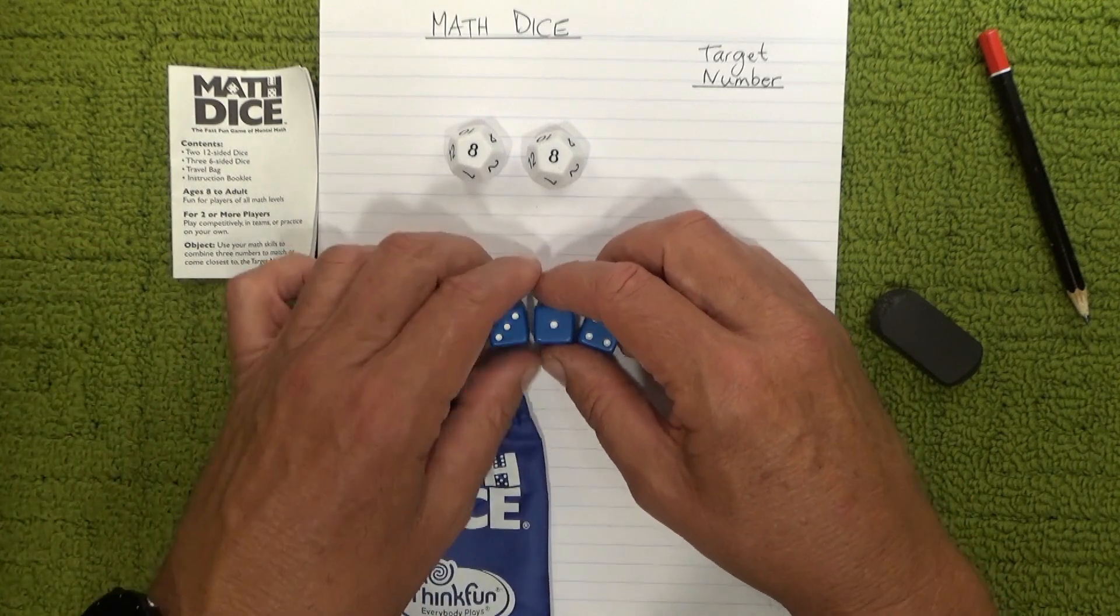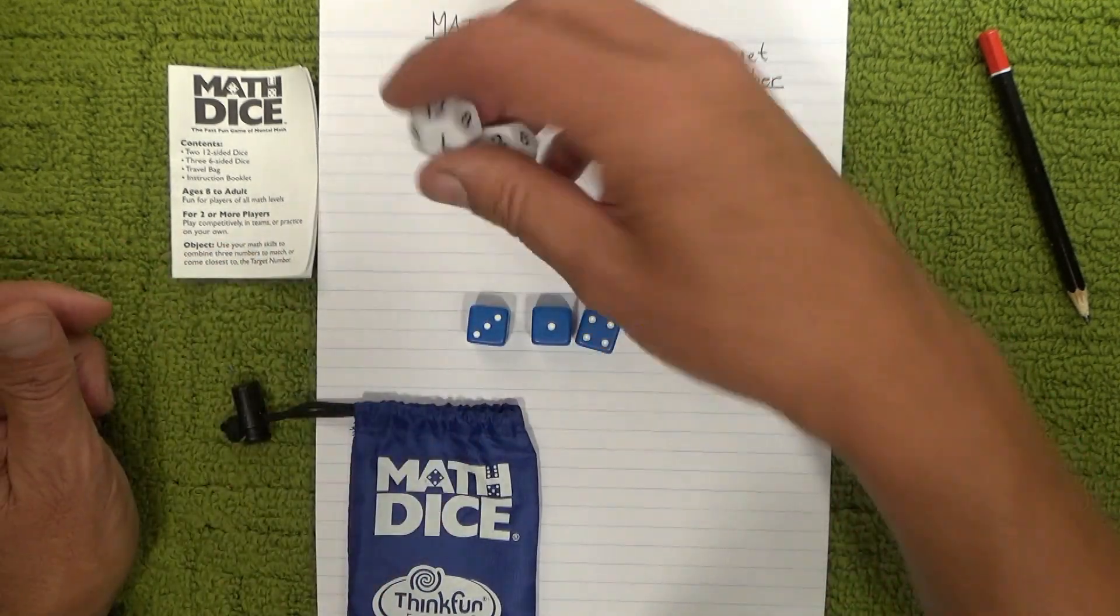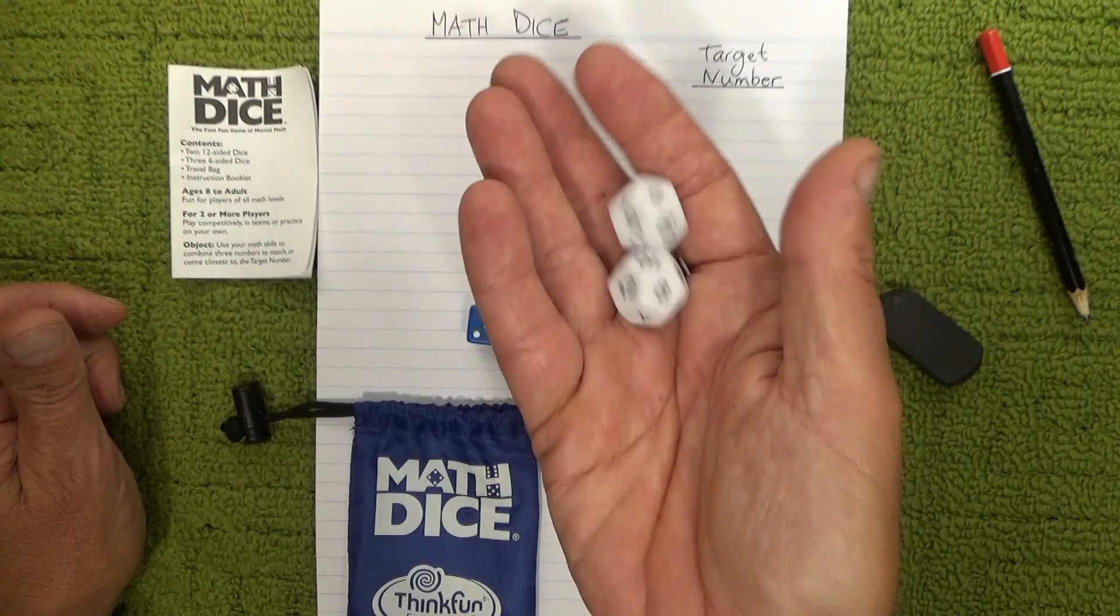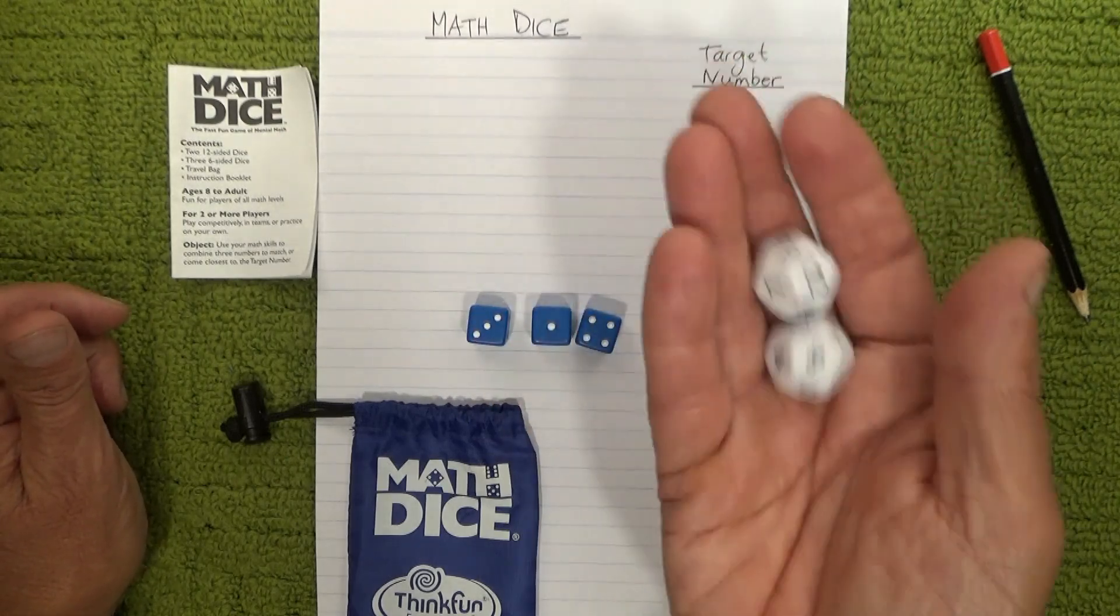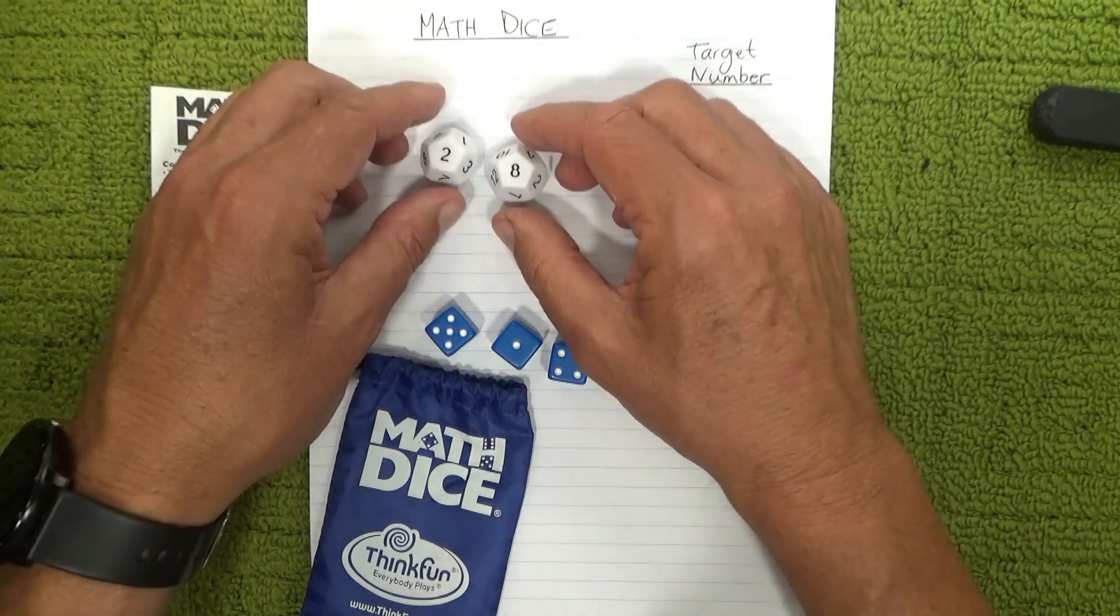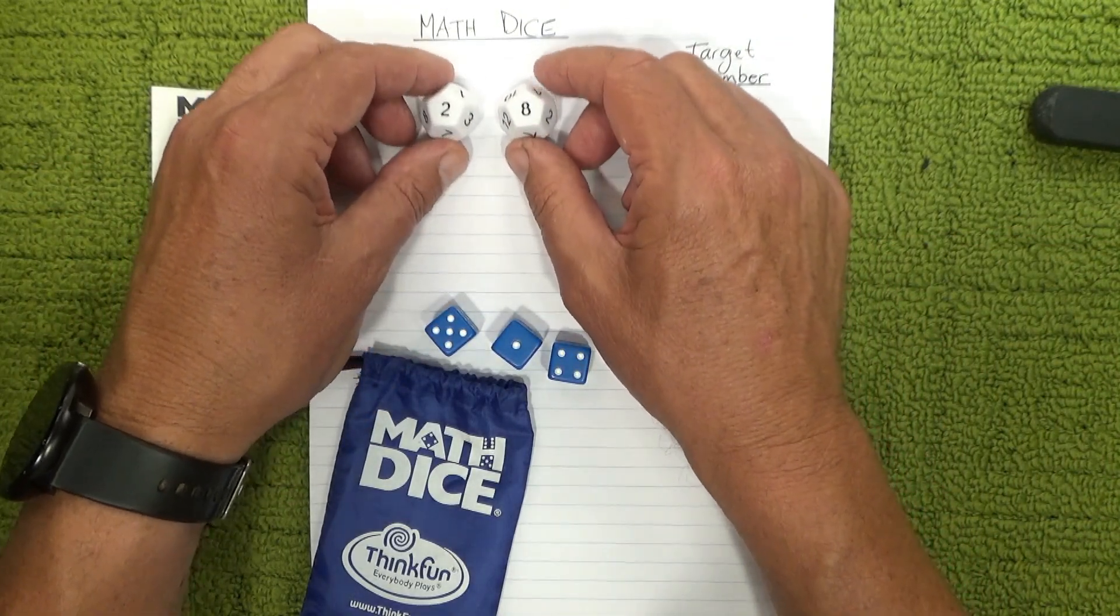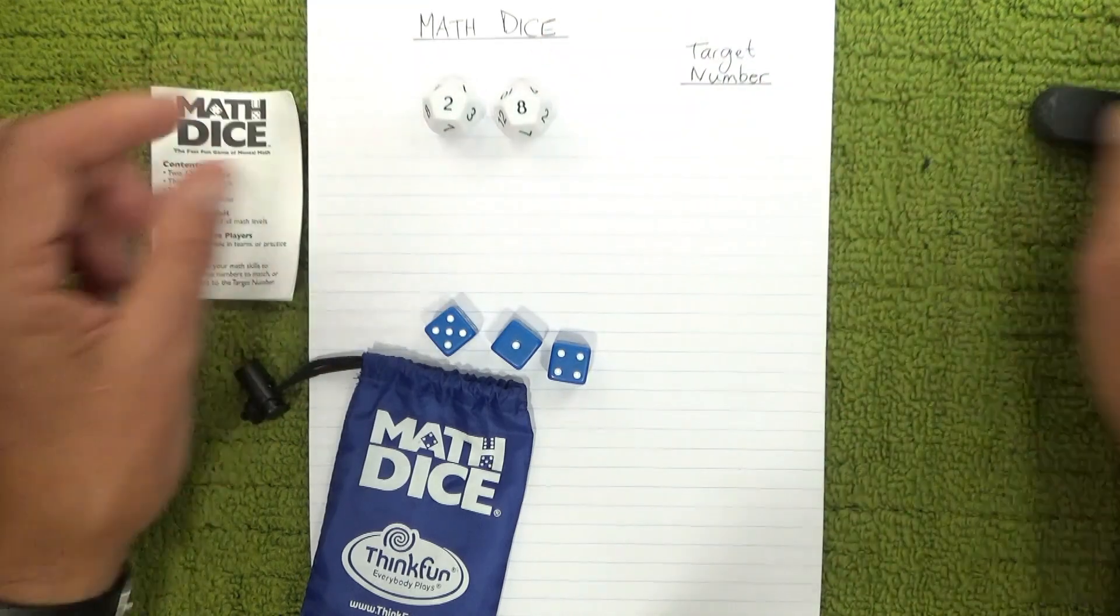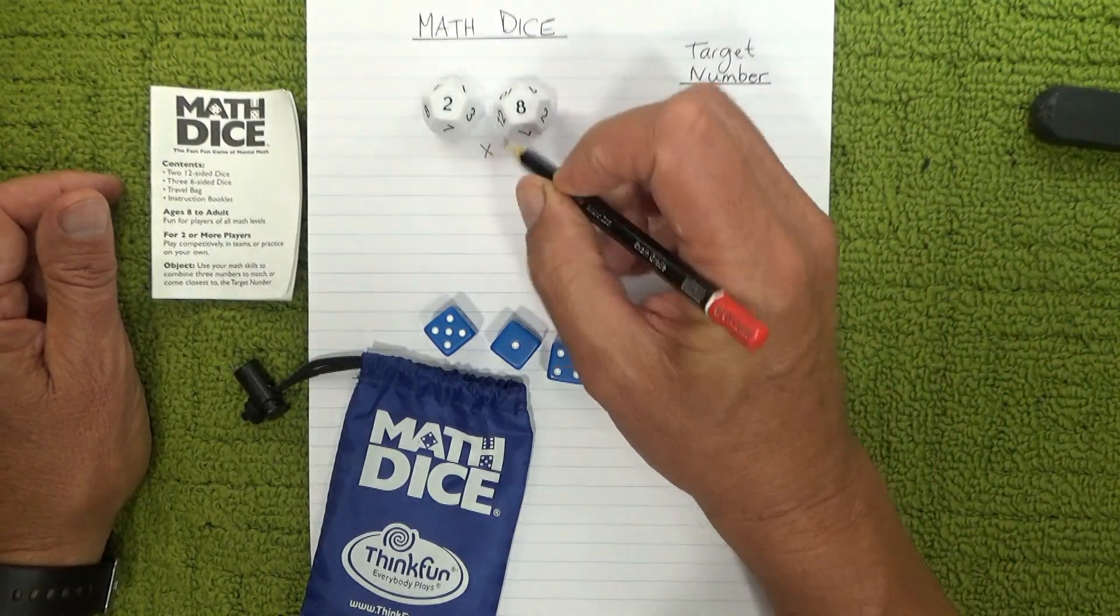What you have to do is first of all you throw the two 12-sided dice. Okay, then you get two numbers, two and eight, and then you multiply those two numbers together. Two times eight equals sixteen.